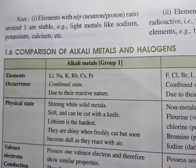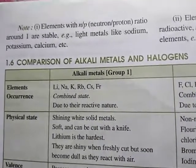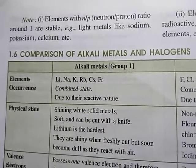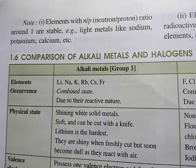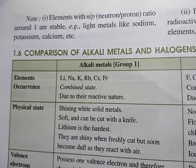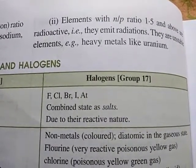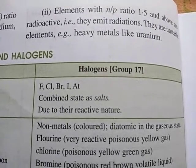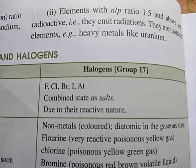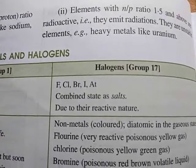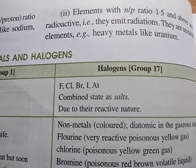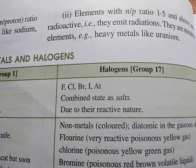On page number 16, there is a note. Elements with n/p (number of neutrons upon number of protons) ratio equal to 1 are stable. Elements with n/p ratio of 1.5 and above are radioactive — they emit radiations and are unstable. An example is heavy metals like uranium. Radioactive elements keep on emitting radiations from their nucleus.